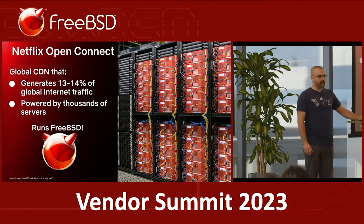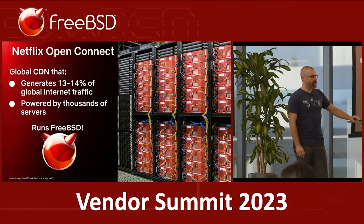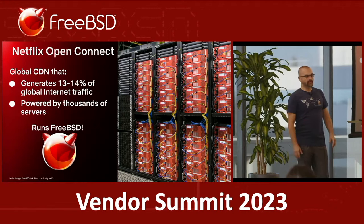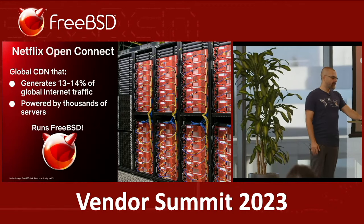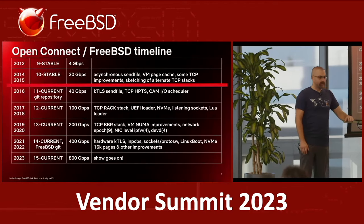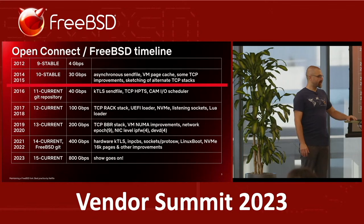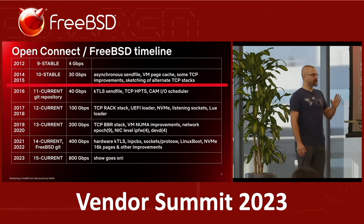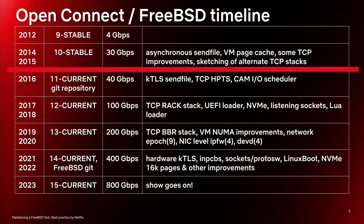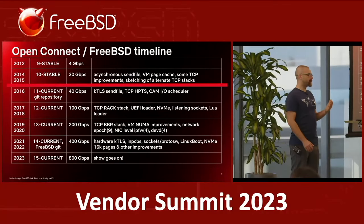In this talk, I want to share our experience on how we maintain the modified FreeBSD fork in our team. This is probably the most loaded slide in my talk, so I ask you not to rush with reading it. The Open Connect started in 2012 and was basically unmodified FreeBSD stable with Nginx on it, able to serve less than half of a 10 gigabit interface.